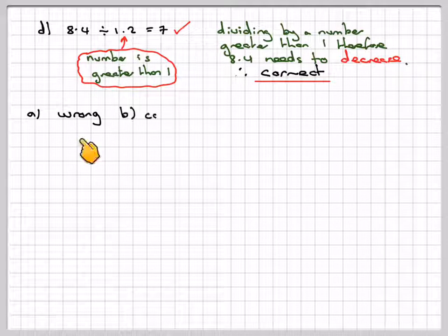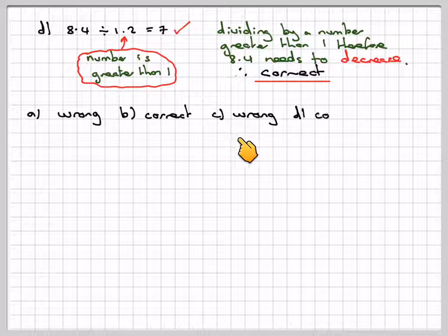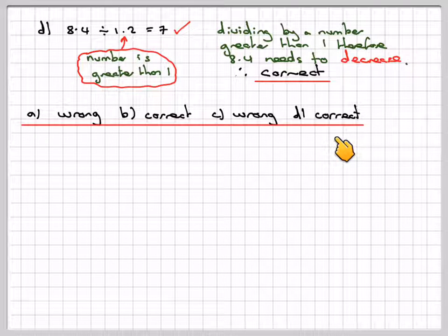So in summary, A is wrong, B was correct, C was wrong, D was correct.